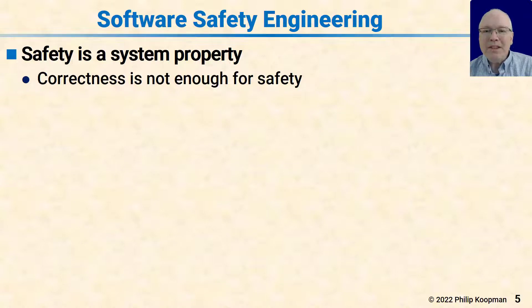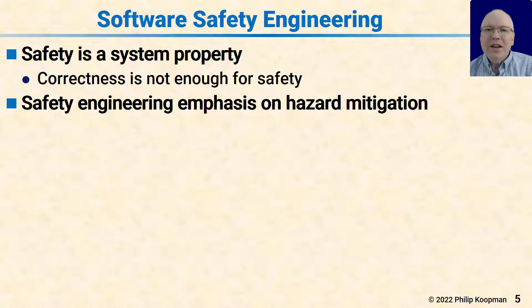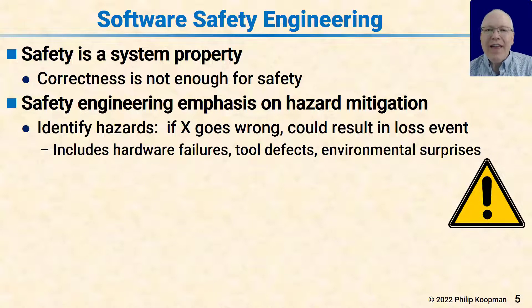That means of necessity, safety engineering is more than just looking at requirements and implementing code. Part of it is writing the requirements, but even more is understanding that safety affects the requirements. The heart and soul of most safety engineering has to do with hazard mitigation. The idea is you identify the hazards — things that can go wrong.